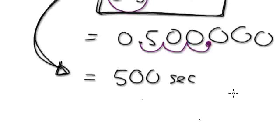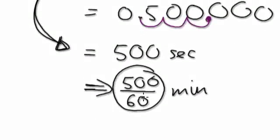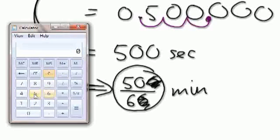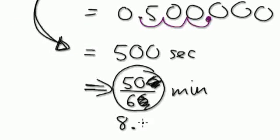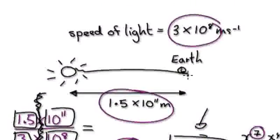If you want the answer in minutes, divide by 60. So it implies 500 over 60 minutes. Dividing top and bottom by 10 gives 50 divided by 6. Calculating that: 50 divided by 6 equals approximately 8.33 minutes. So it takes about 8.33 minutes for light to travel from the Sun to Earth.